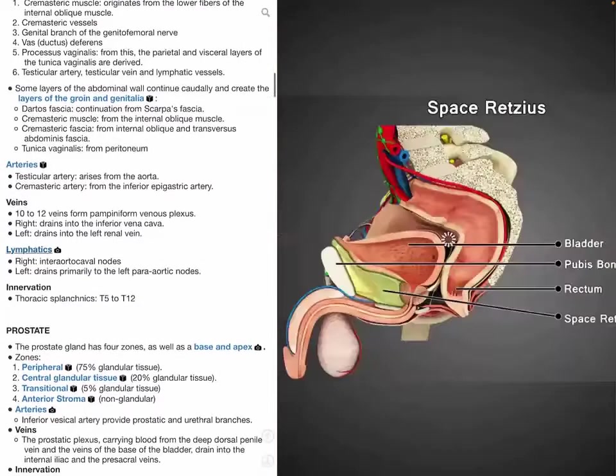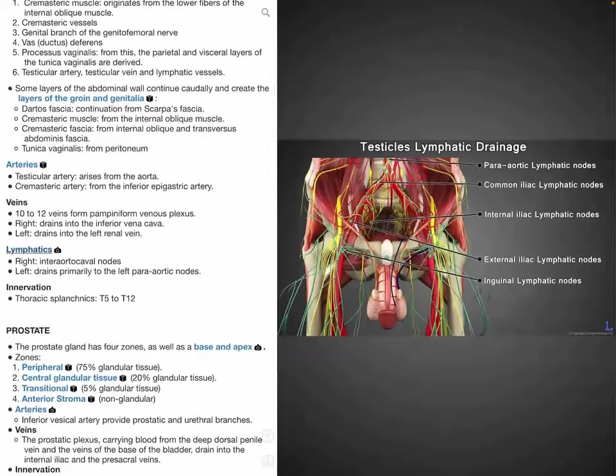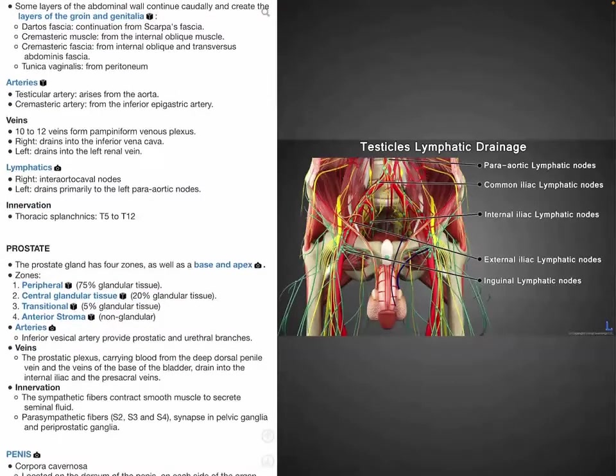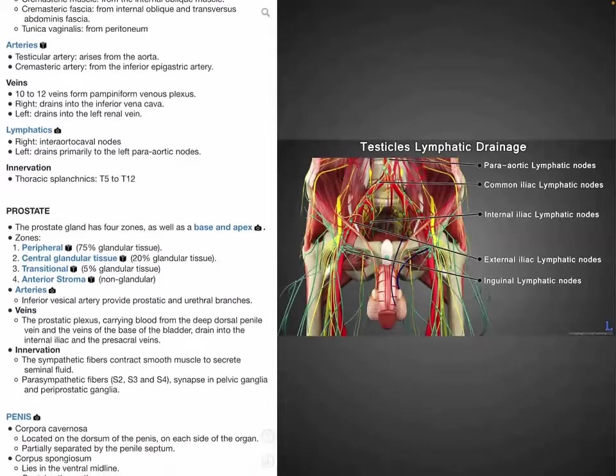In terms of lymphatics, the right side drains into the interaortocaval nodes, while the left drains mostly into the left para-aortic nodes. The testes are innervated by the thoracic splanchnics arising from T5 to T12.